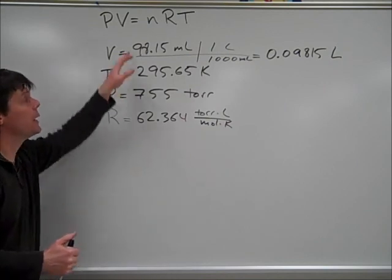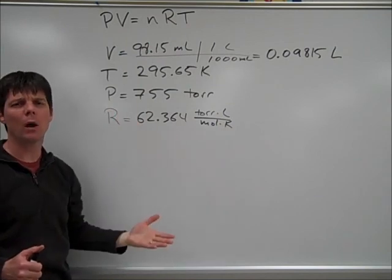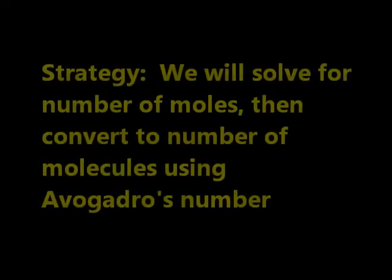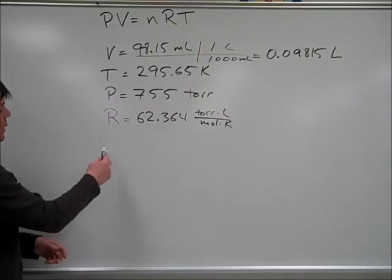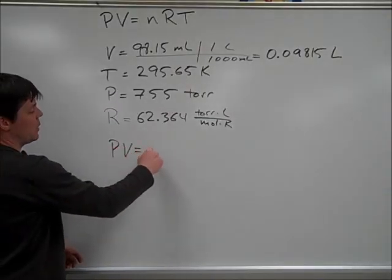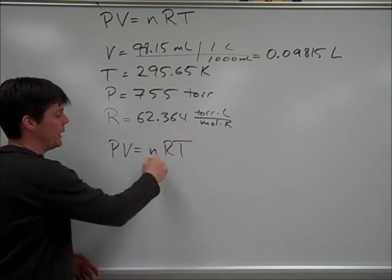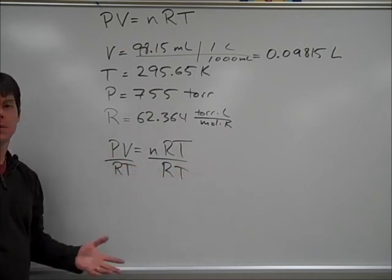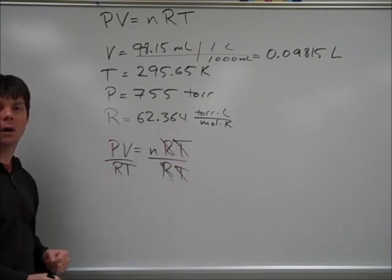Our next step is to take the ideal gas law and solve in terms of n. Now, you might be asking, why are we doing this, aren't we looking for a number of molecules? This is our strategy. PV equals nRT. To solve for n, we need to divide by RT. So, n will be equal to PV over RT.